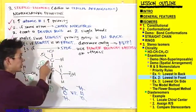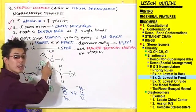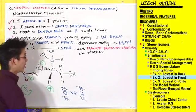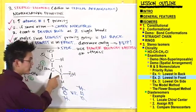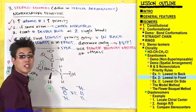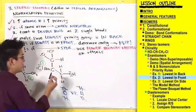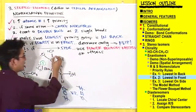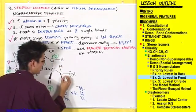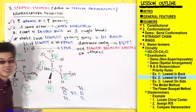So this substituent up here is going to get priority number two, and by default this substituent over here is going to get priority number three. Let's fill that in — number two and number three.